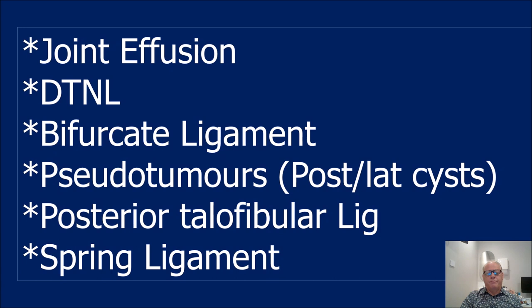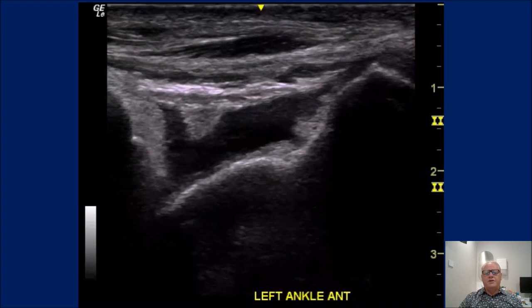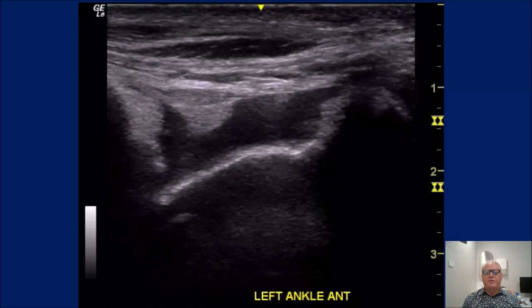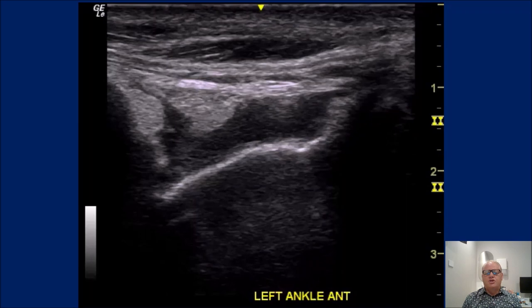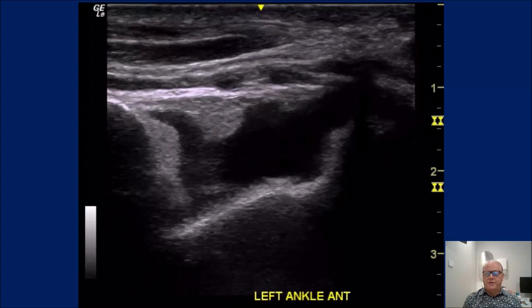What I want to look at now is joint effusion, dorsal talonavicular ligament, bifurcate ligament, pseudotumors, posterior talofibular ligament, and the spring ligament — these are not really well documented in protocols, and there's lots of pathology that can be missed here. Joint effusion is normally in the anterior joint recess — when we dorsiflex we can see the fluid moving. Joint effusions are the first thing that come with a significant injury, they tell us the injury is significant. It's the first to come and the last thing to go — swelling is the last thing to go.